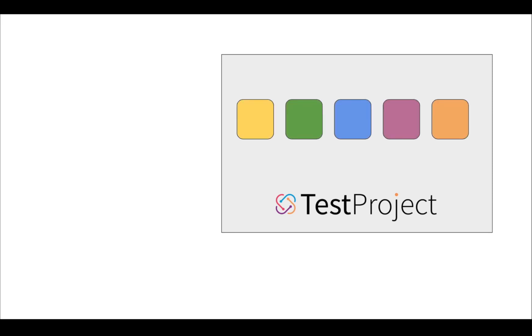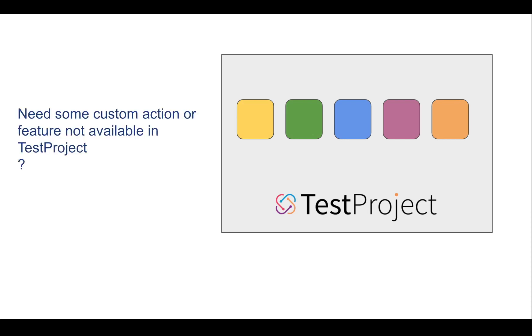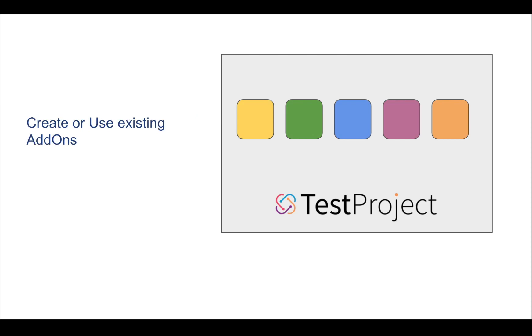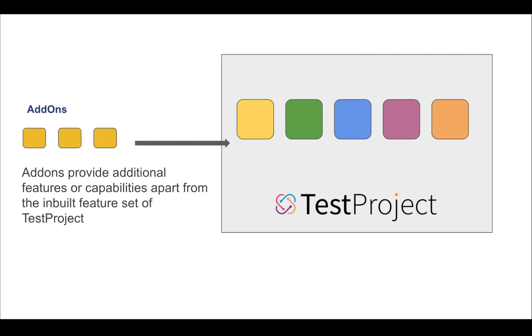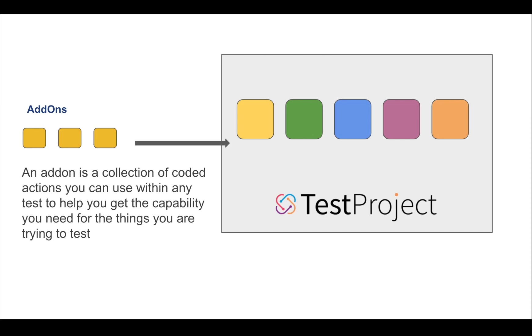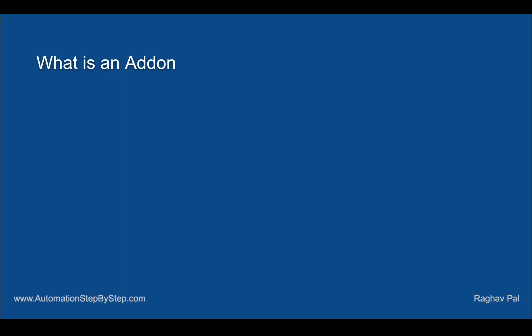In Test Project, we have all the features, libraries, and capabilities required for general automation, and you will find all these inbuilt. However, there can be scenarios where you need some very custom action or feature which is not already available in the default feature set of Test Project. In that case, you can use add-ons. Add-ons are additional features or capabilities not present in the inbuilt set of Test Project, and an add-on is like a collection of coded actions that you can use within your test.